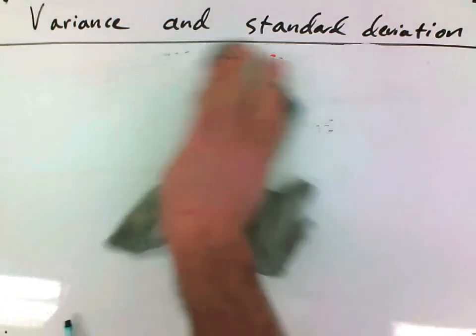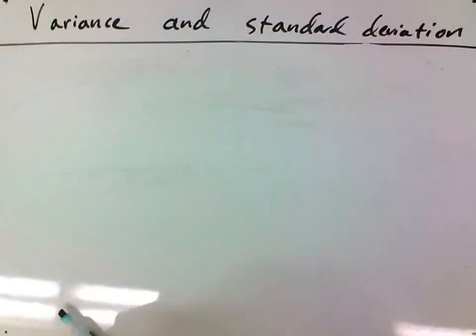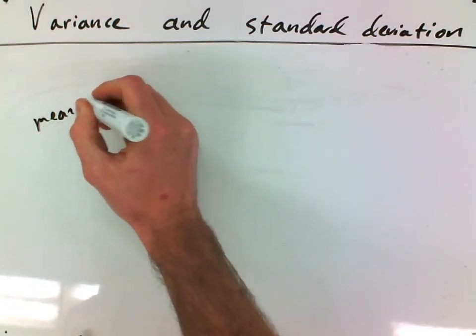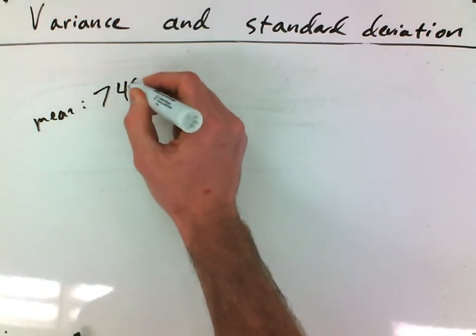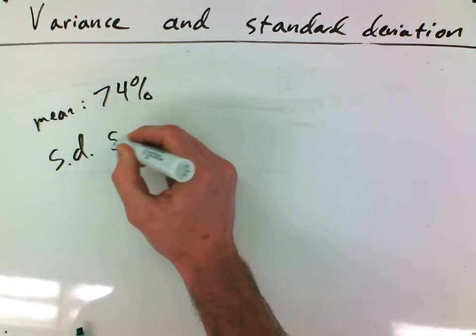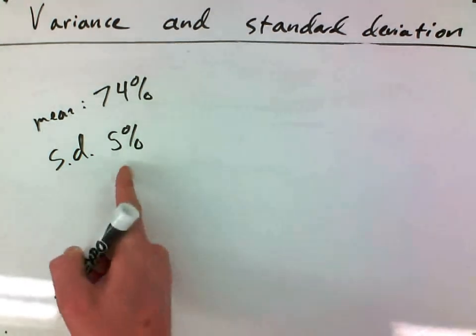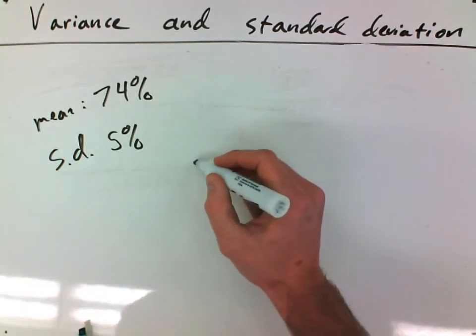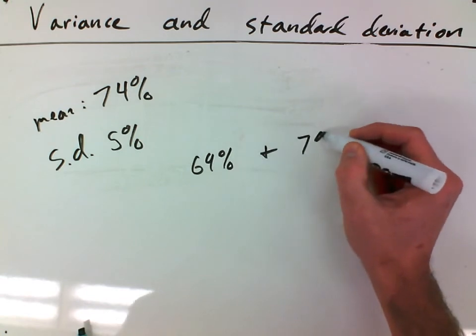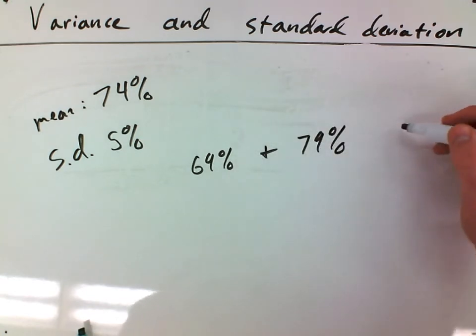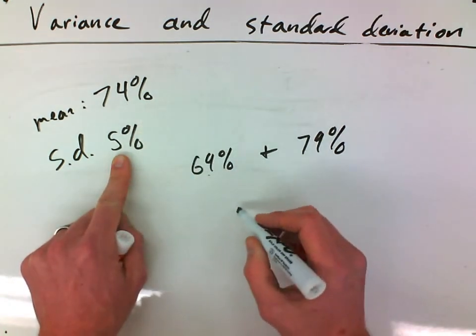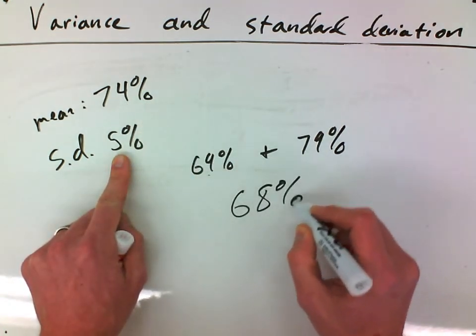So if I had a class, if I gave out a test and I figured out that the mean score was a 74% and I had a standard deviation of 5%, I could conclude from that that between 69% and 79%, one standard deviation above, one standard deviation below, 68% of my students are in that range.